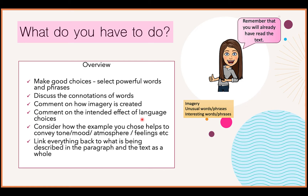Finally, you've got to make sure that you're linking everything back to what is being described in the paragraph and the text as a whole — do not take it out of context. This question is about language in context, so you're not going to get marks for just talking about what a word might mean in isolation. Think about how it's been used in this particular paragraph to tell you something about a person, a jungle, or an animal.